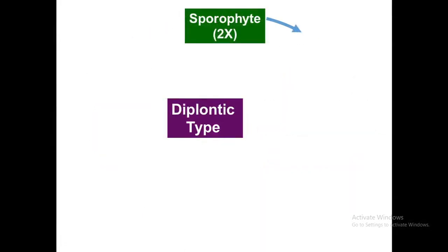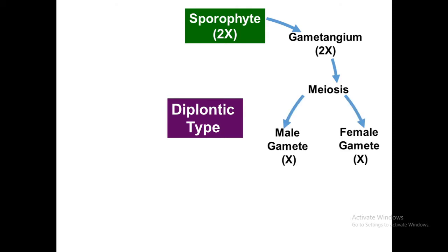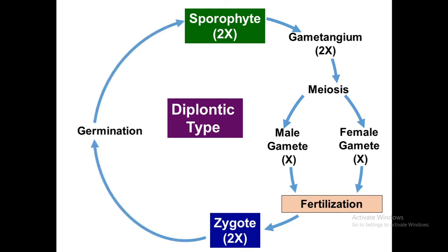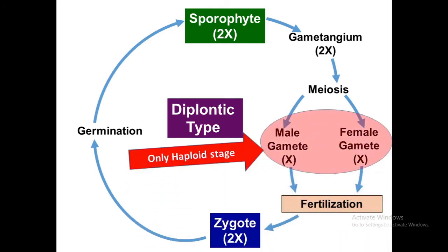In the diplontic type, the vegetative phase is diploid and the haploid phase is restricted to the gametes only. The diplontic type is very common in Fucus, Sargassum, and many diatoms. A diplontic life cycle starts with a diploid sporophyte which produces a diploid gametangium. After meiosis in that gametangium, it produces male gametes and female gametes, which get fertilized to form a zygote that immediately germinates to form a sporophyte. In this entire life cycle, the male and female gametes are the only haploid stage.